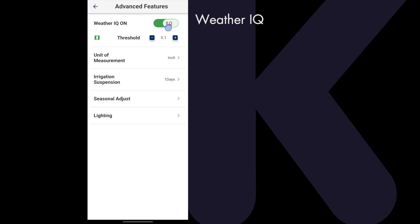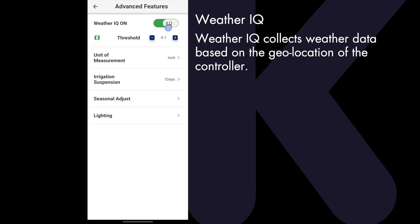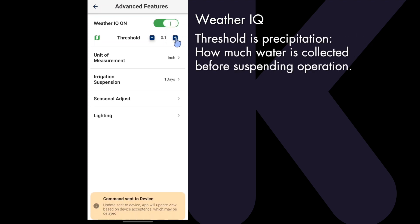Pro-LC has some great advanced features. WeatherIQ collects weather data based on the geolocation of the controller. Geolocation requires that the customer has set the controller location during registration. Threshold is precipitation — how much water is collected before suspending operation. The default is set at one tenth of an inch, but can be adjusted as you like.